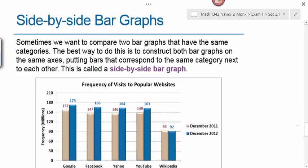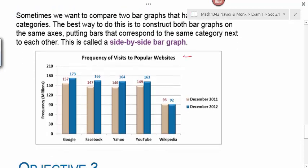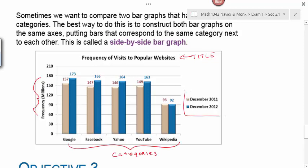It's also possible to have something called a side-by-side bar graph. Sometimes we want to compare two bar graphs that have the same categories. The best way to do this is to construct both bar graphs on the same axis, putting the bars that correspond to the same category next to each other. This is called a side-by-side bar graph. The title of the bar graph tells you what information you're being presented with. This information right here, we call the key kind of like a map has a key. This graph has a key that tells us which color bar represents which year.